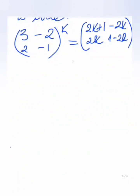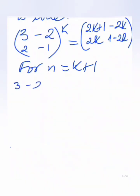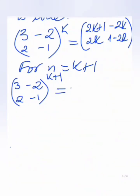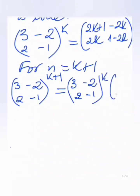To do the inductive step we make use of the assumption from the hypothesis step. For n equals k plus 1, we need to prove [3, -2; 2, -1] raised to the power k plus 1. In order to use the assumption, we simplify by writing it as [3, -2; 2, -1] to the power k multiplied by [3, -2; 2, -1], applying laws of indices.